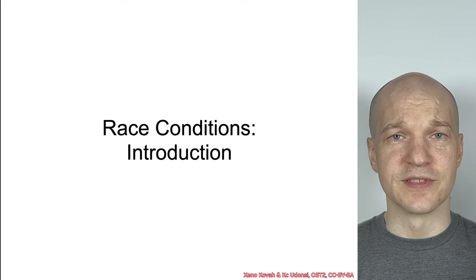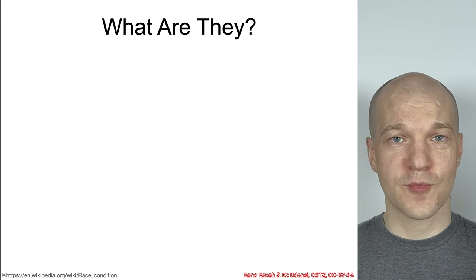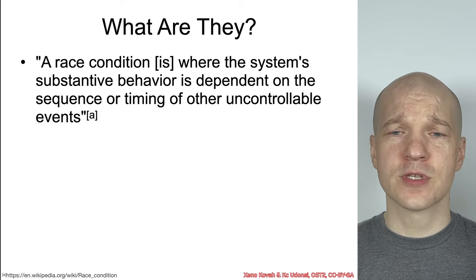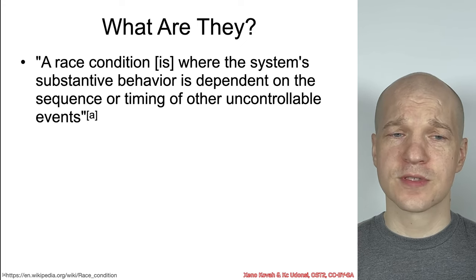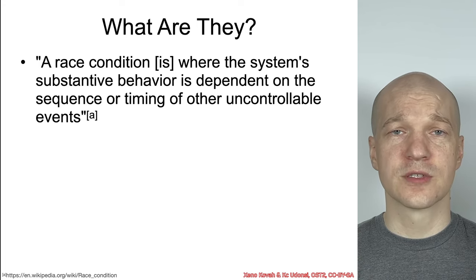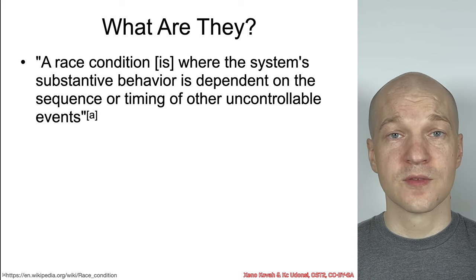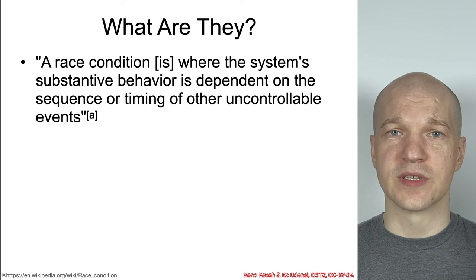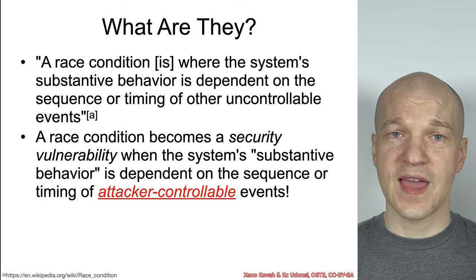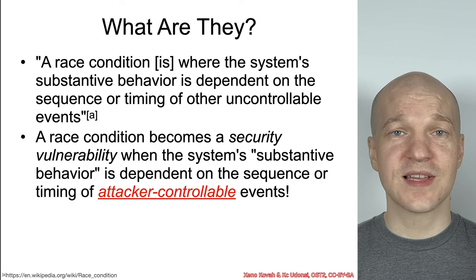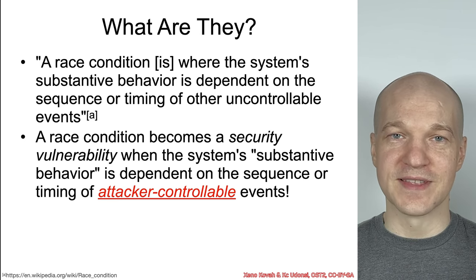Let's learn about race conditions. First and foremost, what are they? According to Wikipedia, a race condition is where the system's substantive behavior is dependent on the sequence or timing of other uncontrollable events. A security vulnerability race condition is when the substantive behavior depends on attacker-controllable events.